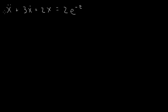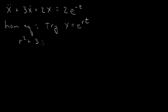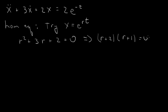The complication is that e to the minus t is a solution of the homogeneous equation. For the homogeneous equation, if we try x equals e to the rt, we get the characteristic equation r squared plus 3r plus 2 equals 0, which factors to r plus 2 times r plus 1 equals 0. So the homogeneous solution is equal to some constant times e to the minus 2t plus some other constant times e to the minus t.